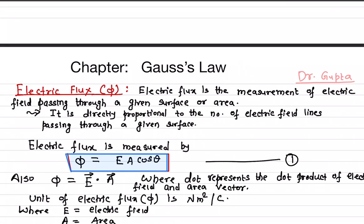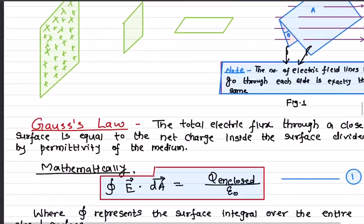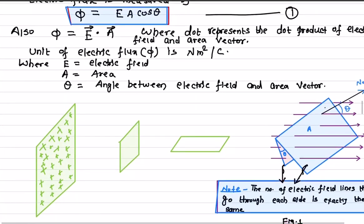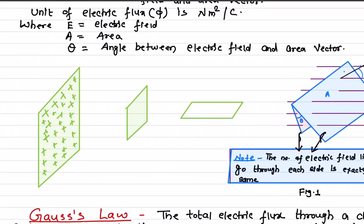In this video I'll be talking about electric flux. Electric flux is a measurement of the electric field passing through a given area. In other words, it is directly proportional to the number of electric field lines passing through a given surface area. Let me explain this first and then we'll go back to the equation for calculating the electric flux.